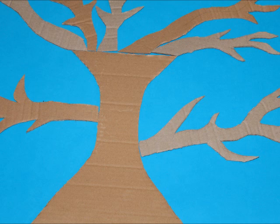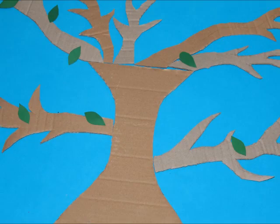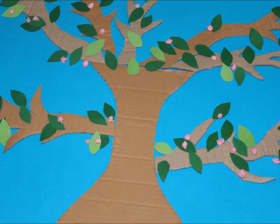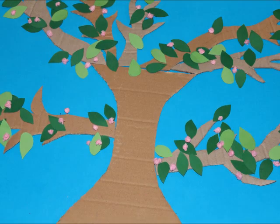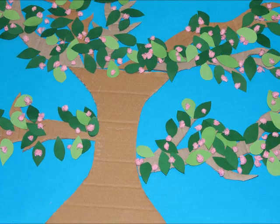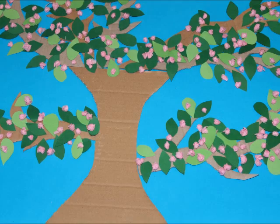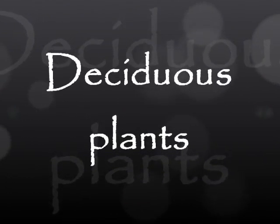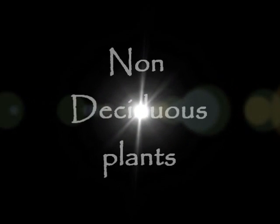Eventually, by the time September arrives, which is the beginning of spring, flowers begin to appear and blossom on the plants. Some of the things that you need to remember are that deciduous plants lose their leaves and that plants can be categorised in two different ways: one being deciduous plants and two being non-deciduous plants.